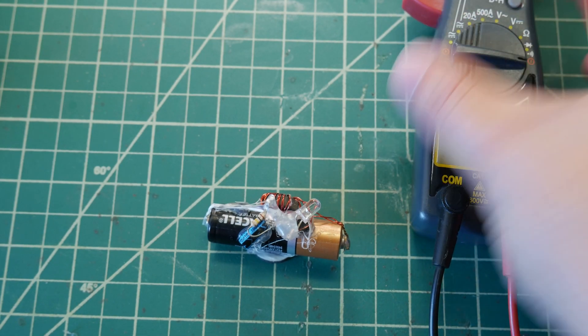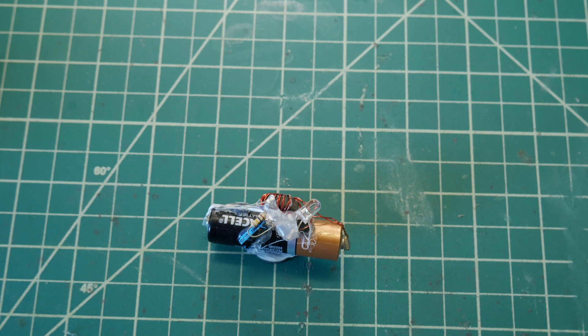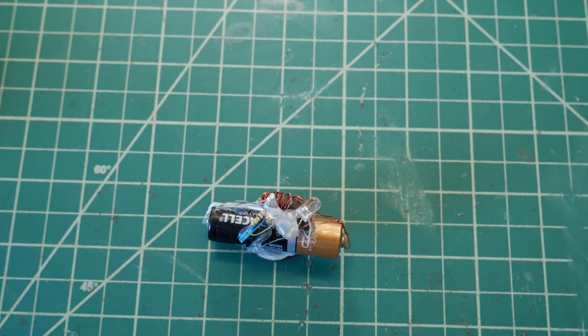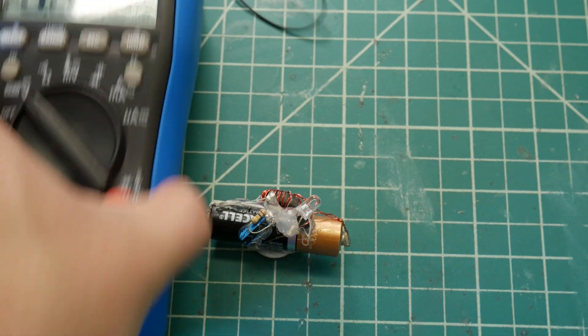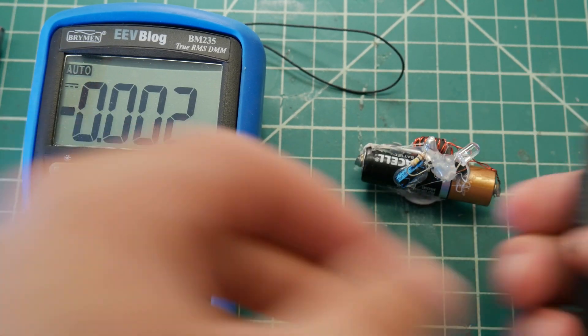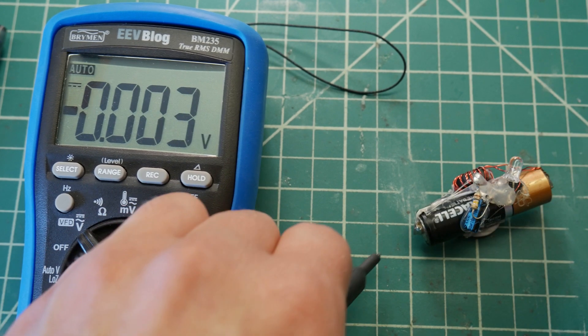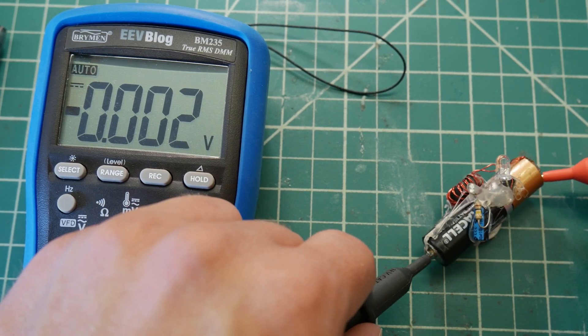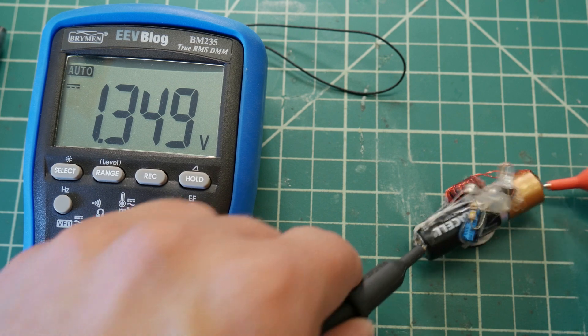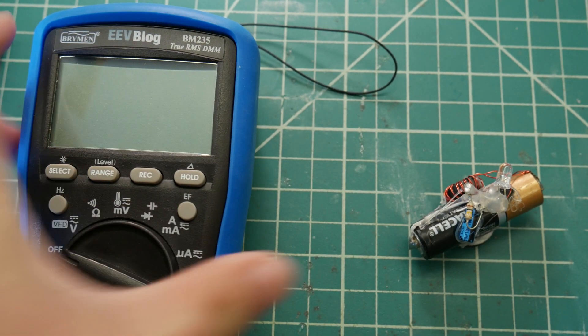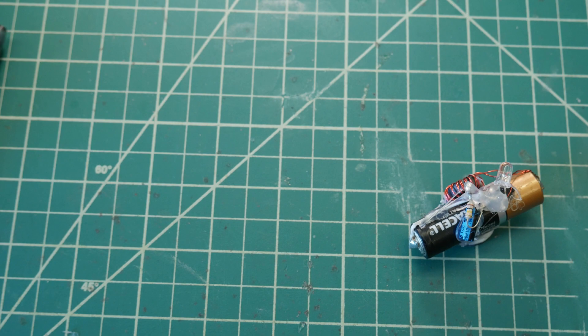And just to verify that this meter is putting out something somewhere close to the right value, we'll go ahead and bust another one out. Let's see what we get on the Bryan and BN 235 here. 1.349, so yeah, it's very close, very close to the cheaper meter.